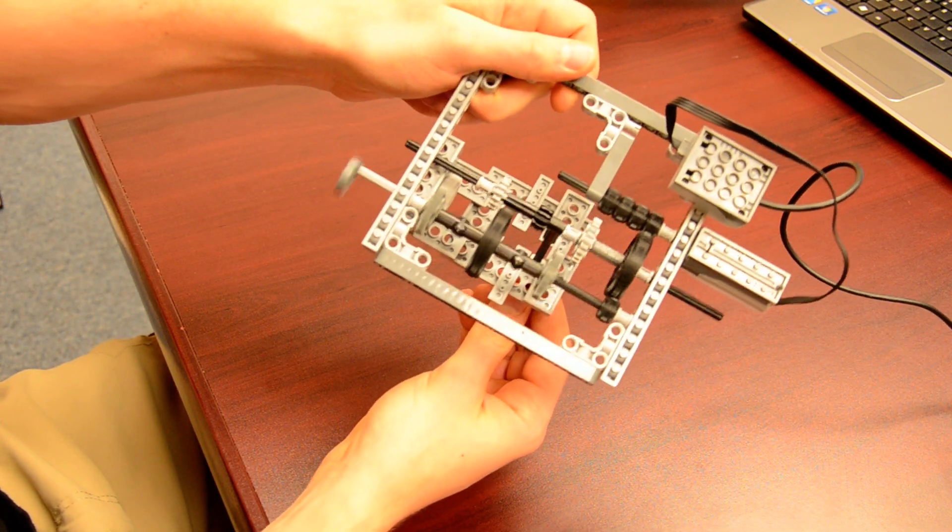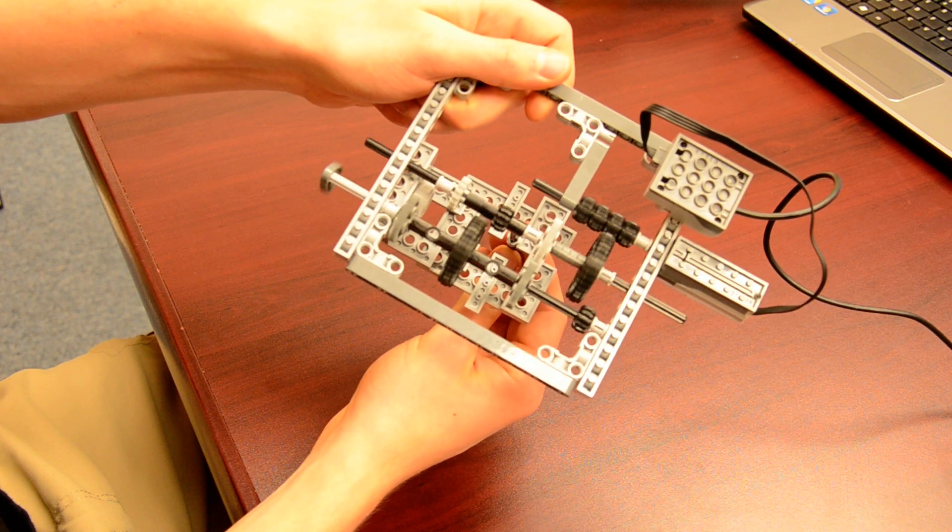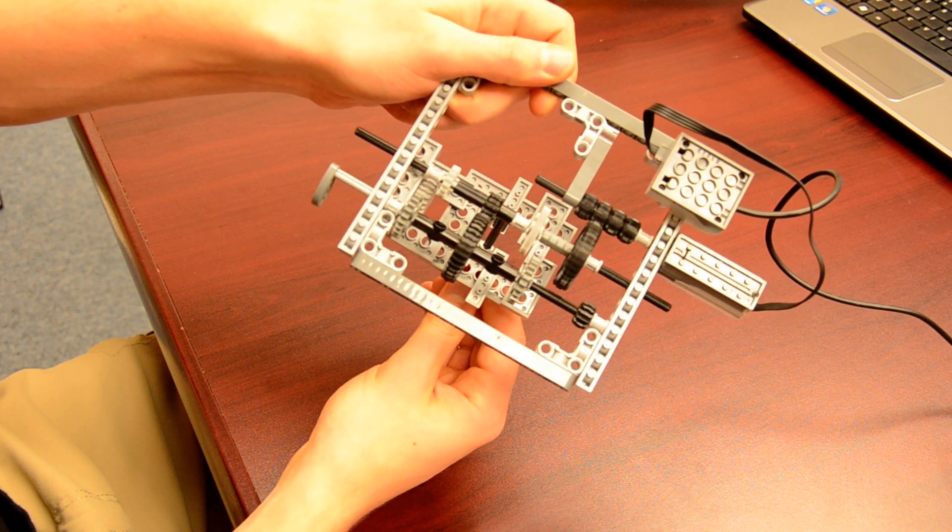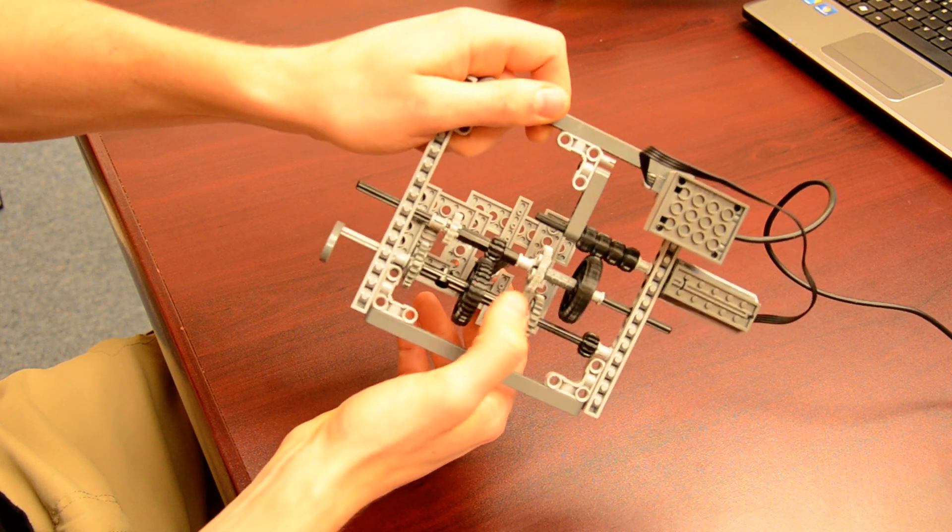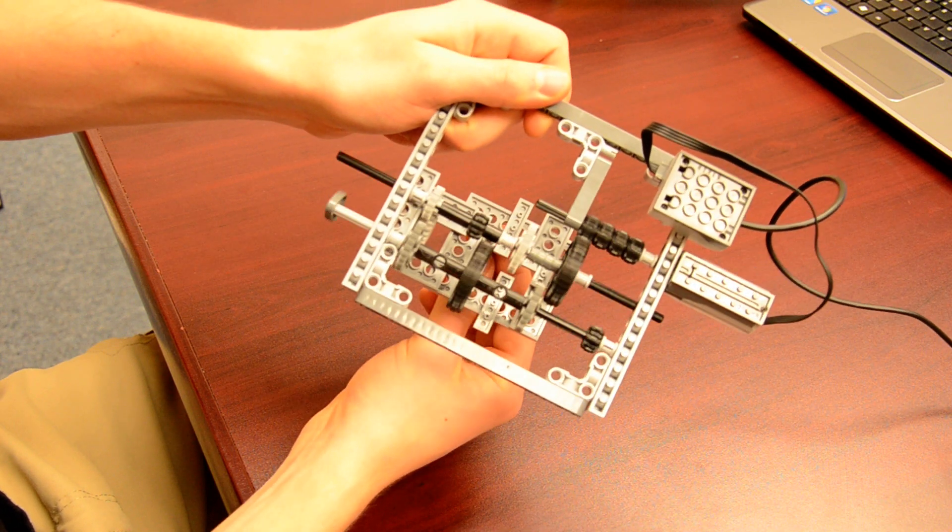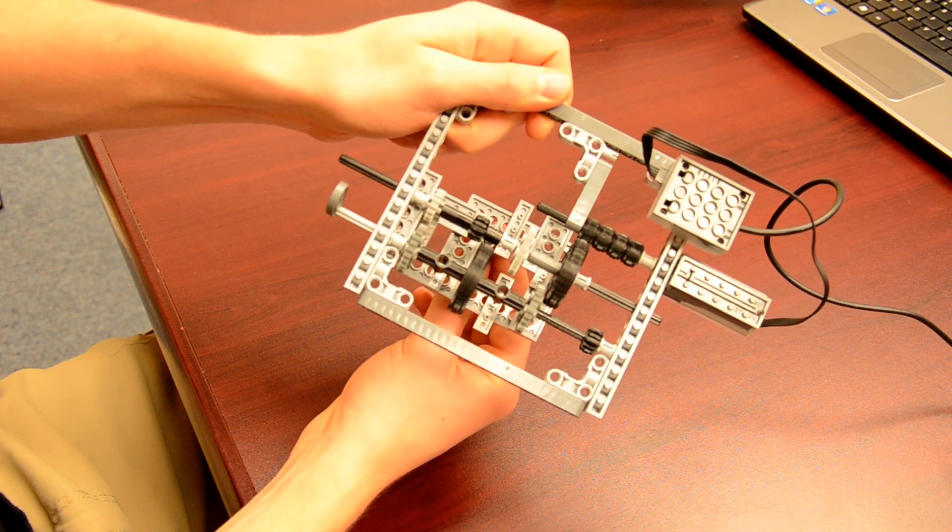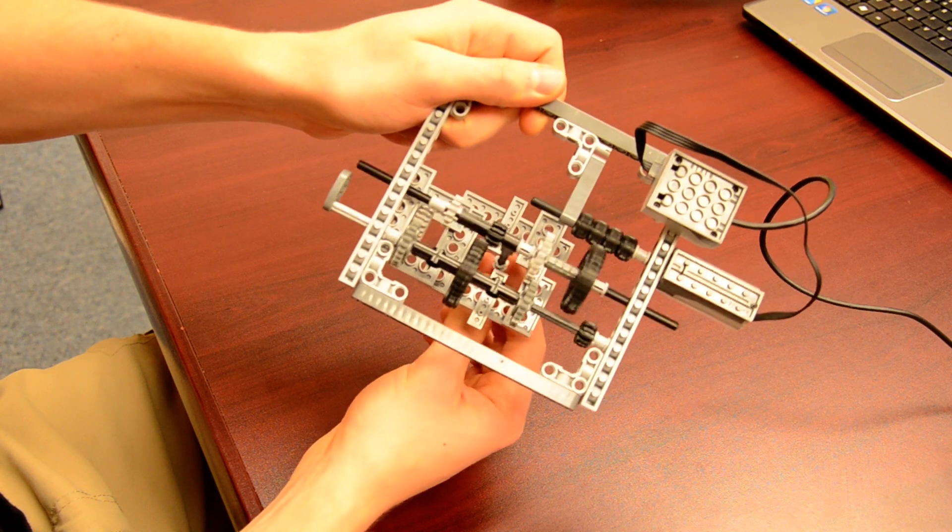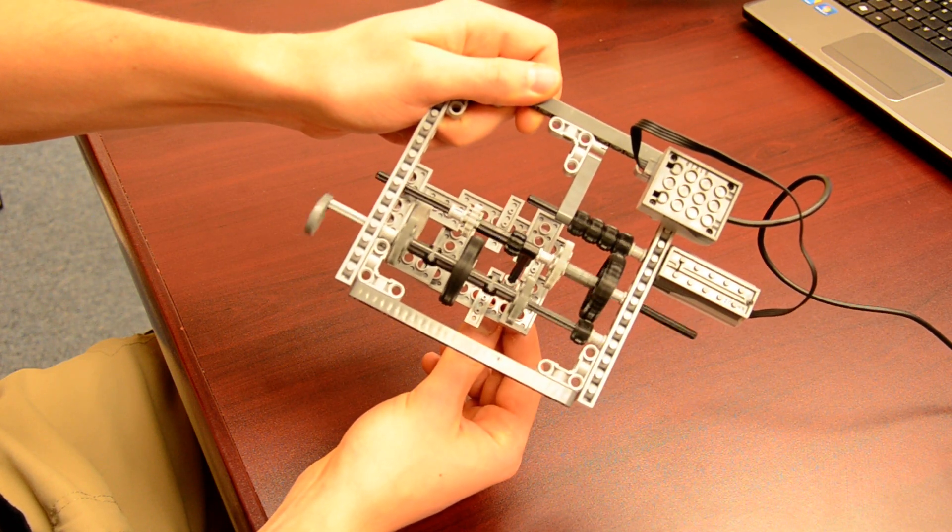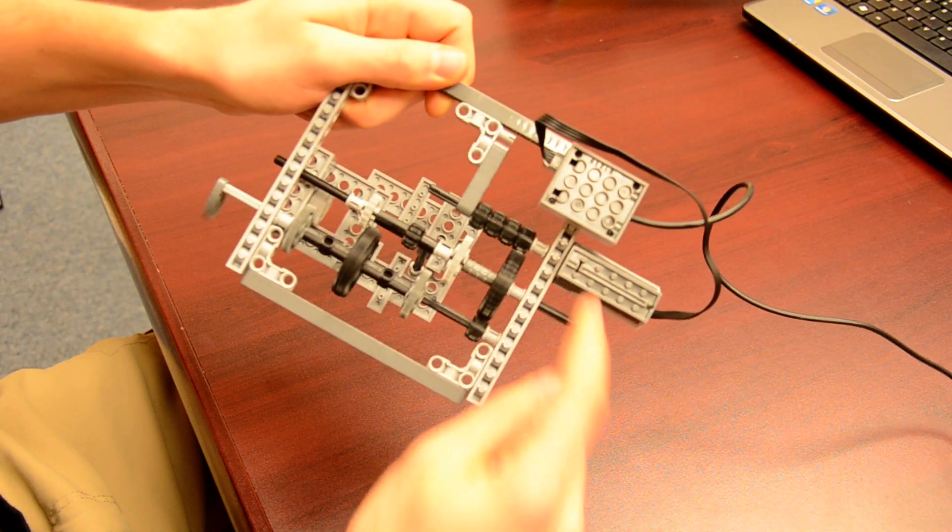So, this is fastest speed. Second speed. First speed. You can see how the different gears contact each other. And reverse. All while the motor is going at the same speed.